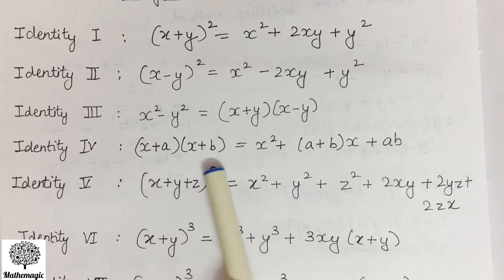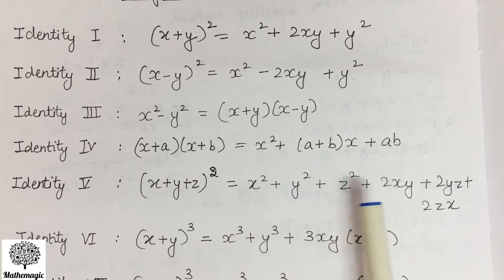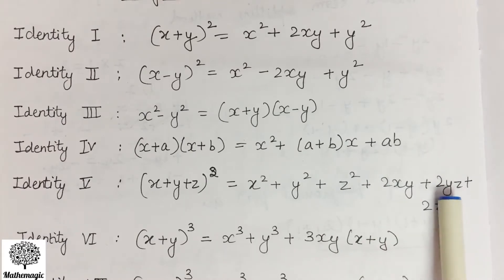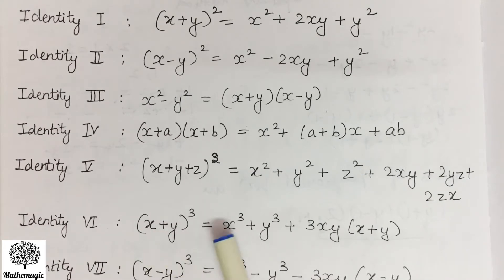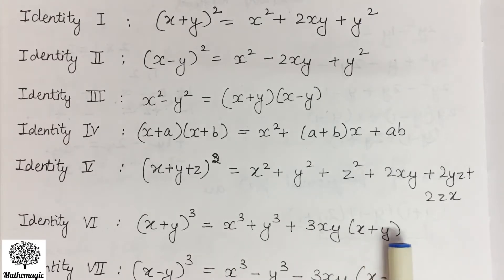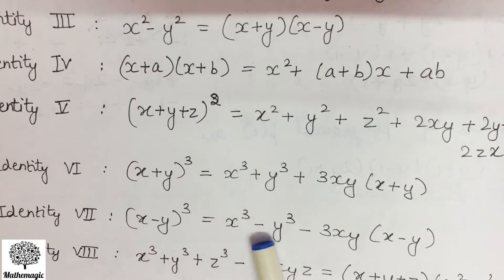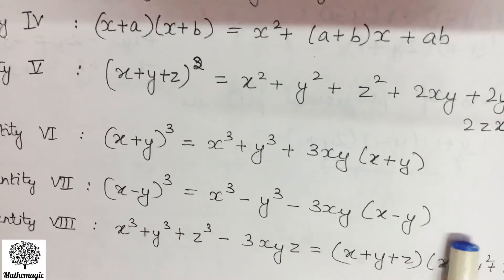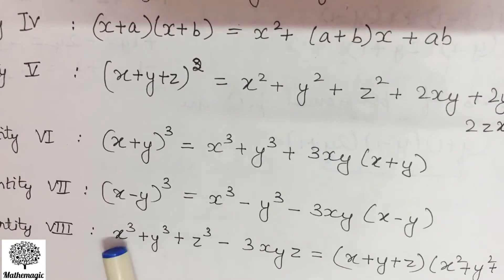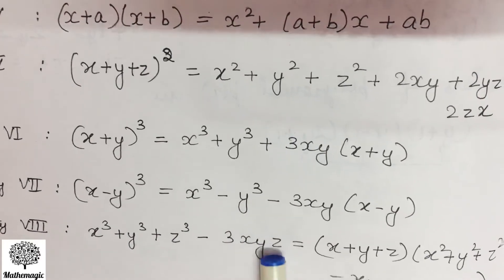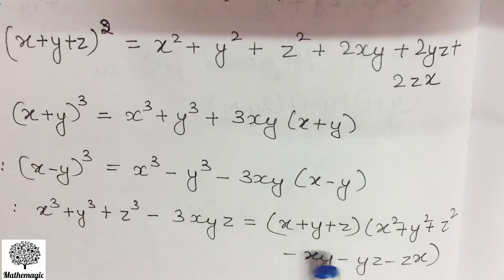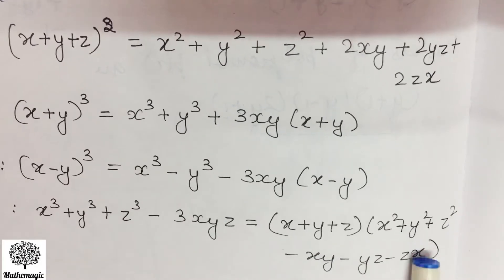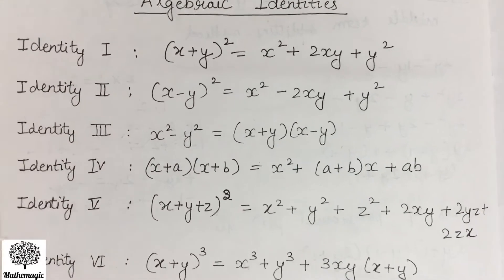Fifth identity: (x+y+z)² = x² + y² + z² + 2xy + 2yz + 2zx. Sixth: (x+y)³ = x³ + y³ + 3xy(x+y). Similarly, (x-y)³ is the same with a change of signs. The eighth identity is x³ + y³ + z³ - 3xyz = (x+y+z)(x² + y² + z² - xy - yz - zx). You have to learn all these identities in order to solve the questions of Exercise 2.5.